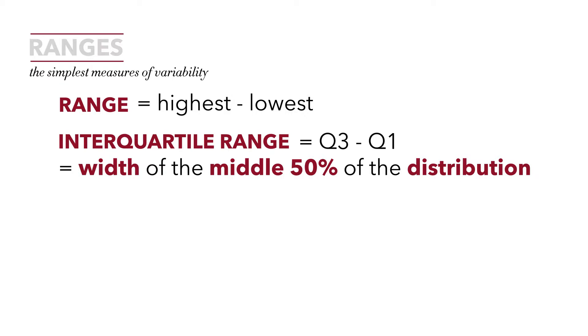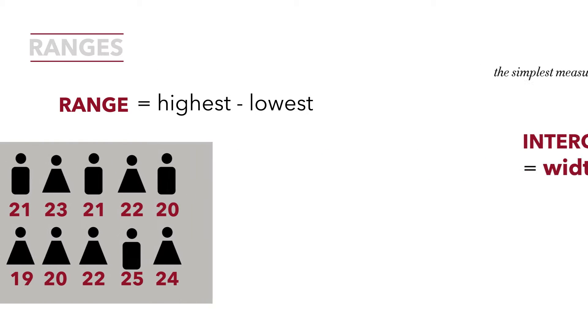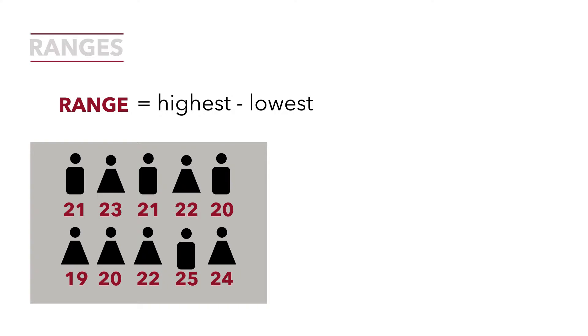We'll talk about each of these in more detail. Using data we've previously used to calculate measures of central tendency, the age of students in a statistics class, we're going to calculate the range. Again, the range is the highest value minus the lowest value. So we can see we have 10 observations.